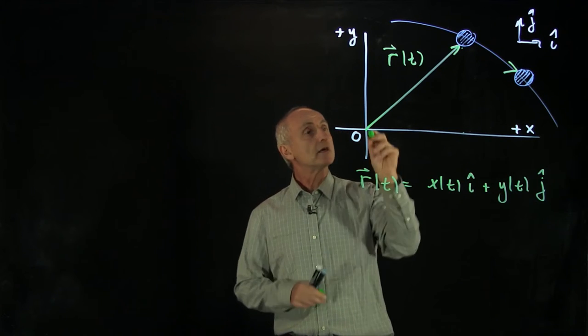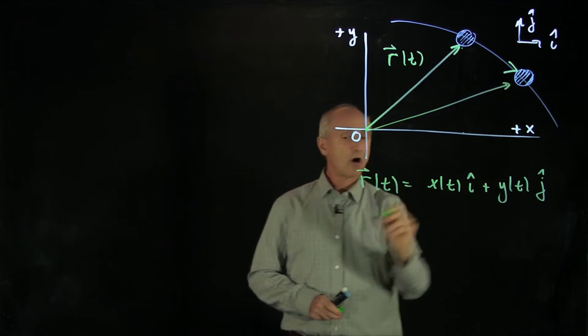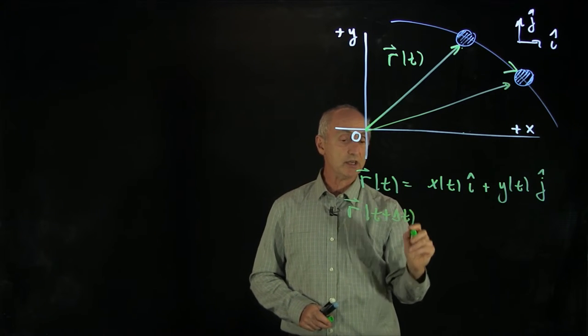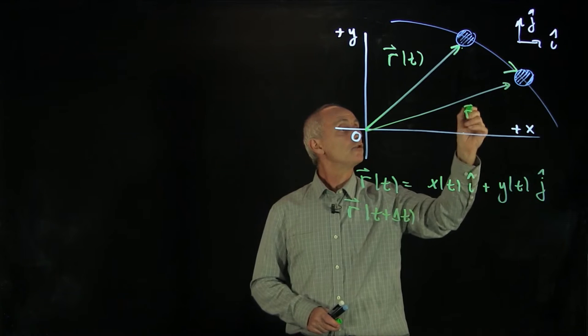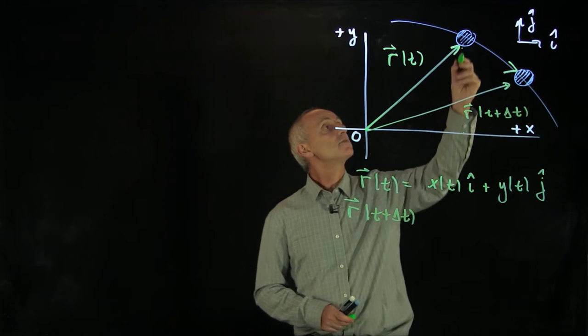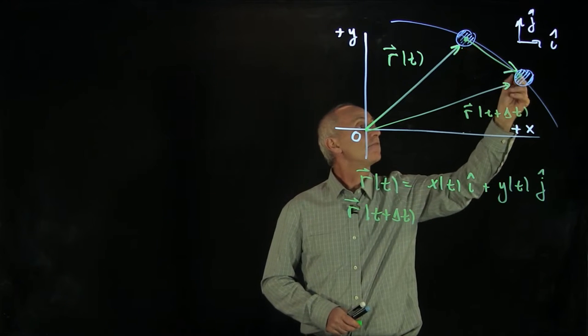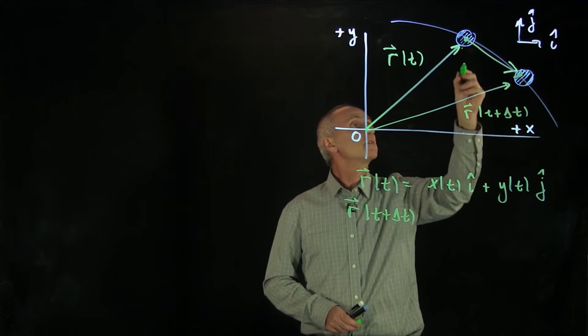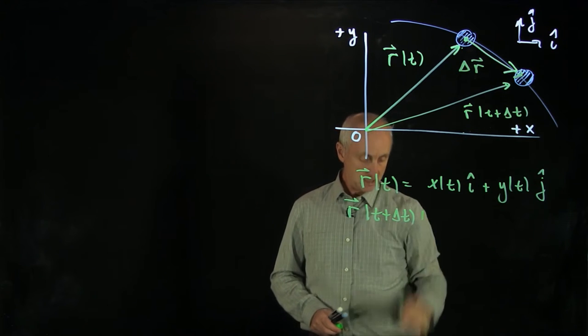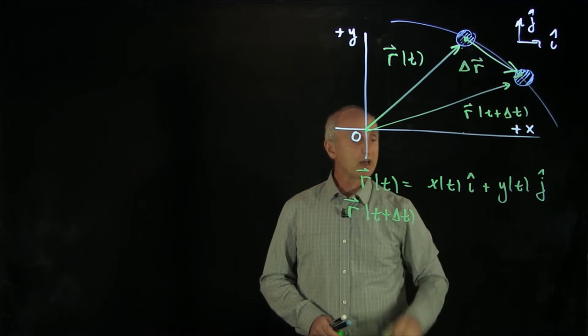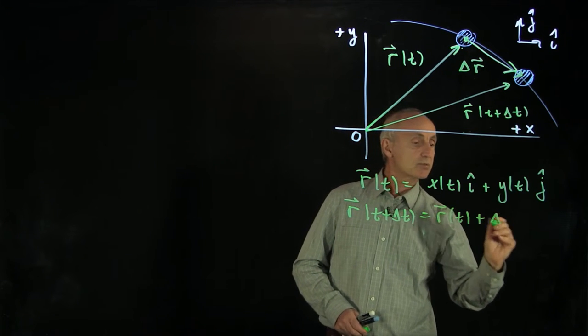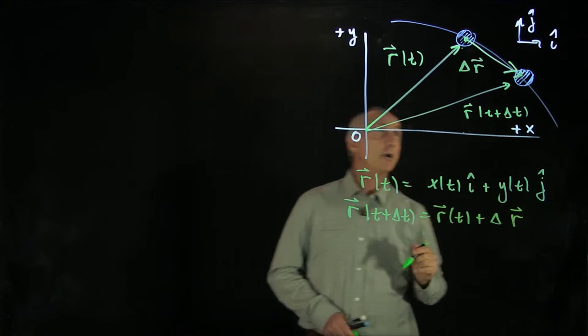We'll write another vector, r of t. And let's say this took a time delta t to the new point. What we want to define is the displacement of that object. So that's a vector delta r. Recall that a vector at time t plus delta t is equal to the old vector, r of t, plus this displacement vector, delta r.